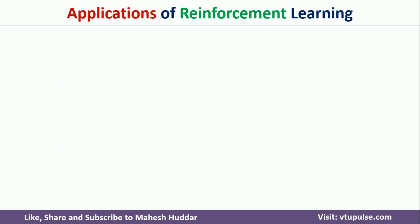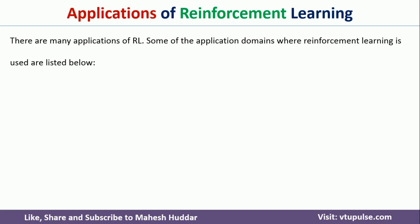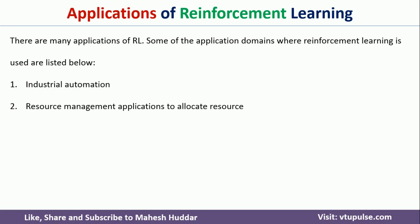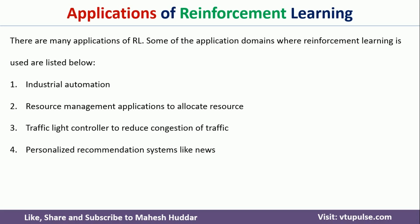Reinforcement learning is used in many applications across almost every domain. It can be used in industrial automation — for making automated design processes or assembly. It can be used for allocating resources in networks or computers optimally. It is also applied to traffic light control: rather than manually observing traffic, reinforcement learning can detect where traffic is heavier or lighter and control signals accordingly.